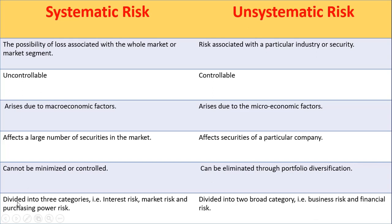Systematic risk is divided into three categories: interest risk, market risk, and purchasing power risk. Unsystematic risk is divided into two broad categories: business risk and financial risk.